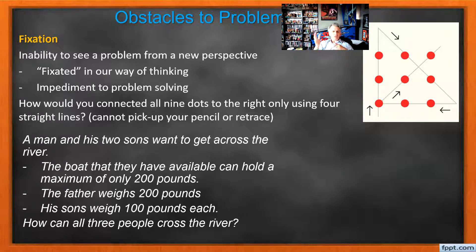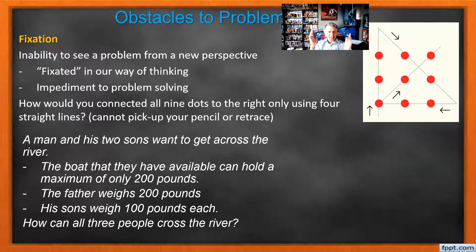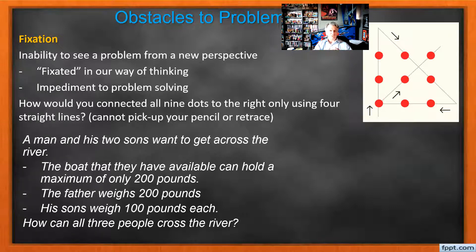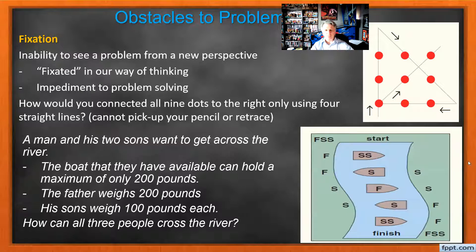Another riddle: a man and his two sons want to get across a river. The boat available can only hold a maximum of 200 pounds. The man weighs 200 pounds, the sons weigh 100 pounds each — that's 400 pounds of people. How do we get them all across in the boat? Nobody's swimming, no one's being catapulted, we're not waiting for the tide. The solution: send both sons across, one son comes back, gives the boat to dad, dad goes across, son goes back over, picks up his brother, they come back across. You make more than one trip! But a lot of times we get locked in thinking we can only make one trip — he became fixated.